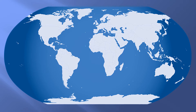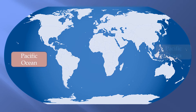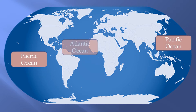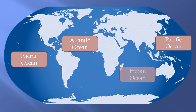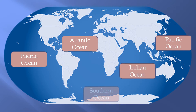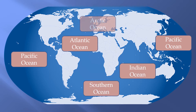There are five oceans on Earth including the Pacific Ocean, the Atlantic Ocean, the Indian Ocean, the Southern Ocean and the Arctic Ocean.